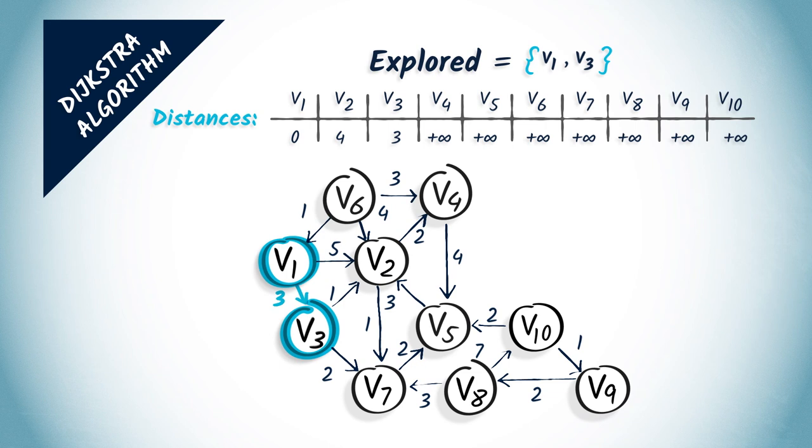As far as v7 is concerned, we now have an estimated distance of 3, the cost of going to v3, plus 2, which is the cost of one hop from v3 to v7.